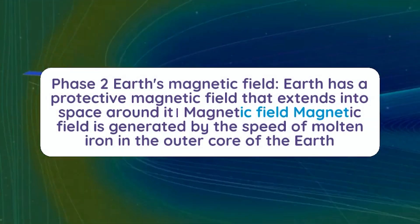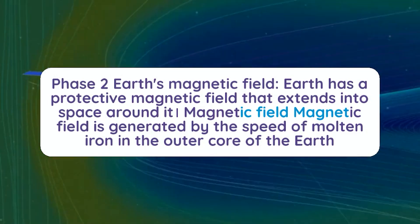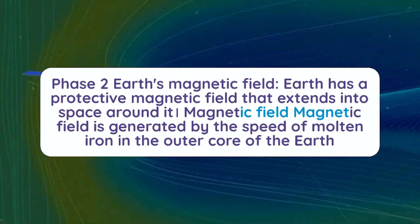Phase 2 is Earth's Magnetic Field. Earth has a protective magnetic field that extends into space around it. This magnetic field is generated by the movement of molten iron in the outer core of the Earth.